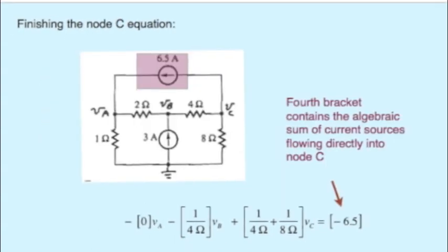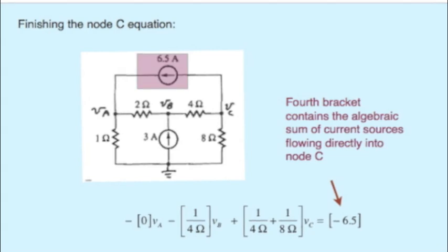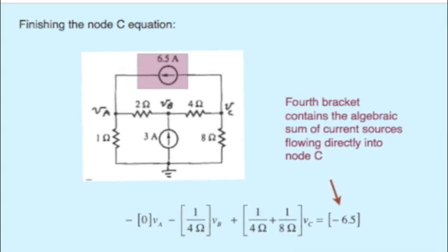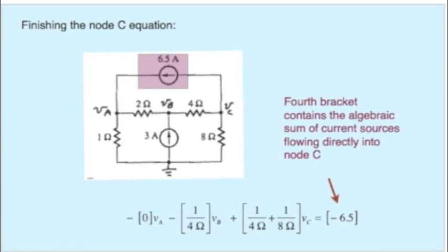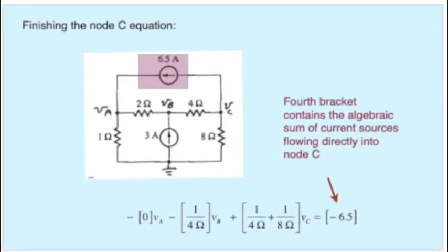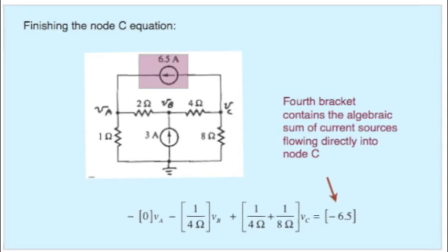To finish the node C equation, we're going to inspect the circuit to see are there any current sources that have one end attached to node C. Yes, there's a 6.5 amp source. The arrow points away from the node, so we use a minus sign for this case.